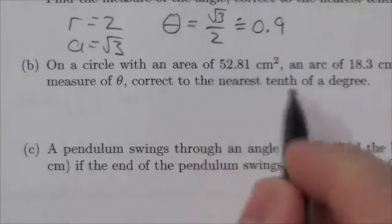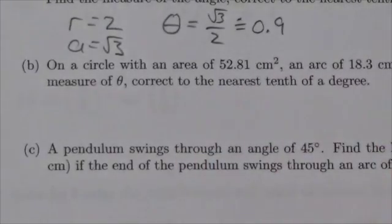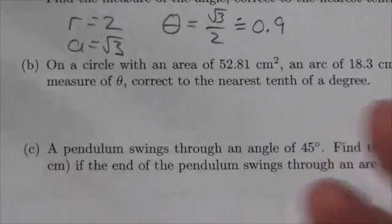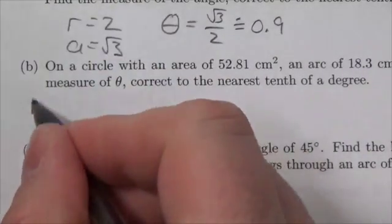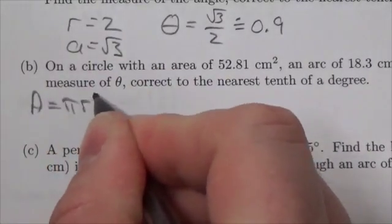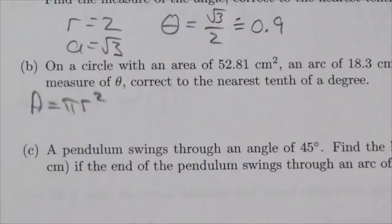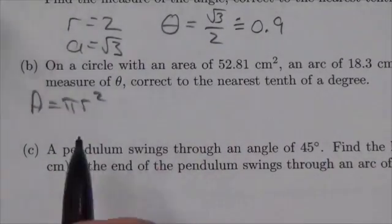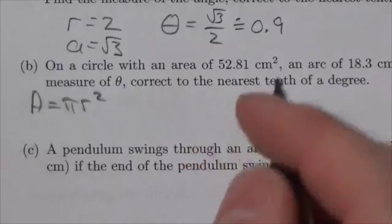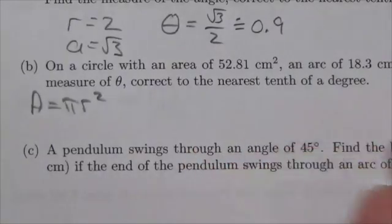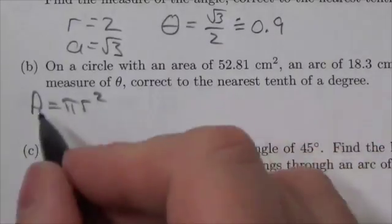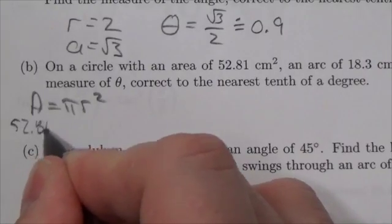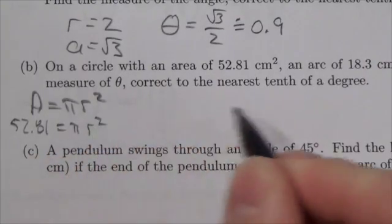The key to this is we give you the area here, so you've got to think: as soon as I give you the area, I'm referring to this equation right here. This is kind of a sideways way of giving you the radius without actually giving you the radius. So what we're going to do is figure this out first: 52.81 is going to equal π r².